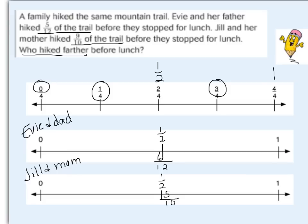Evie and her father hiked five-twelfths. Since five is less than six, five-twelfths is less than one-half. Now for Jill and her mom, who hiked nine-tenths — if I know five-tenths is halfway and she's hiked nine-tenths, I know nine-tenths is a lot greater than a half. So comparing to the benchmark of a half, I can see that Jill and her mom hiked farther before they ate lunch.